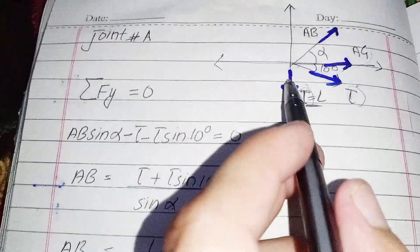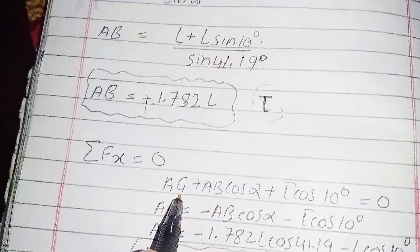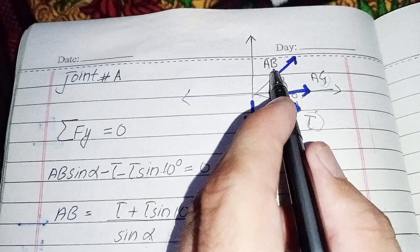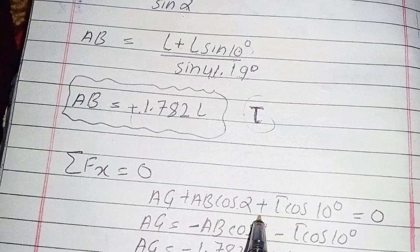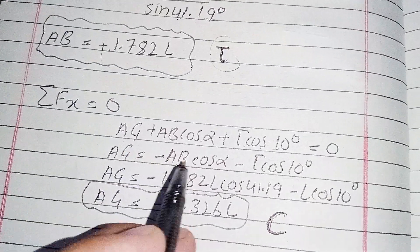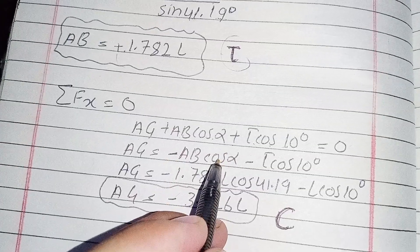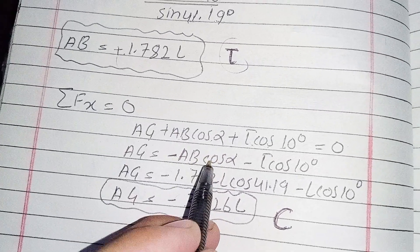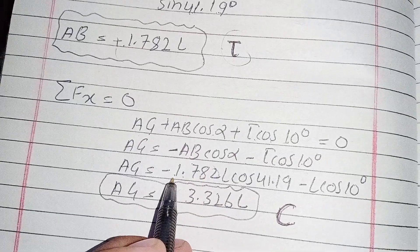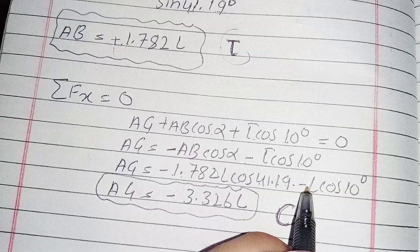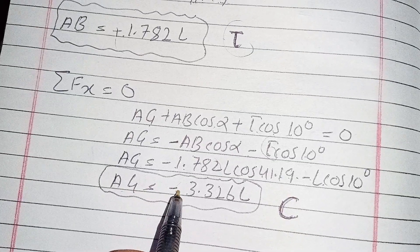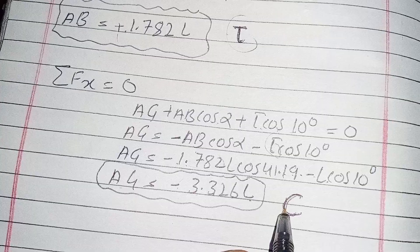Summation of all horizontal forces at joint A equals zero: AG plus AB·cos(alpha) plus T·cos(10°) equals zero. Moving known values to the right side: AG equals negative AB·cos(alpha) minus T·cos(10°). Substituting AB equals 1.782L, AG equals negative 1.782·cos(41.19°) minus L·cos(10°).